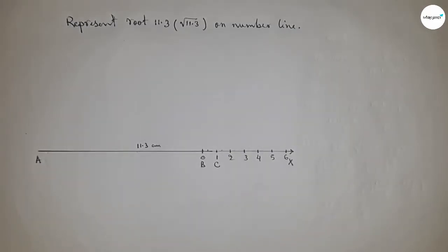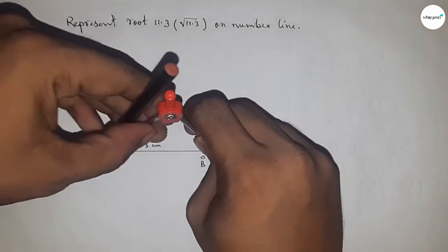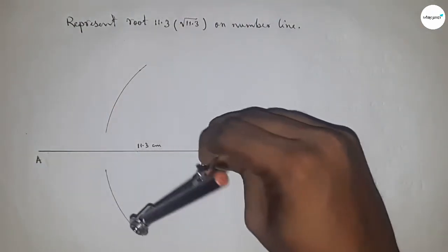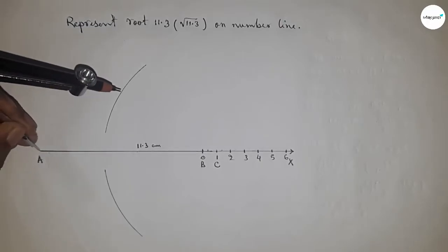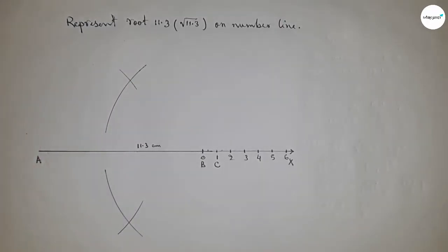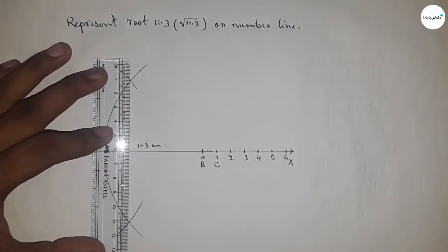Now bisecting the line AC. So putting the compass here and taking greater than half of AC and drawing arc by this way. With same length, putting the compass here and cut here. Now joining this.